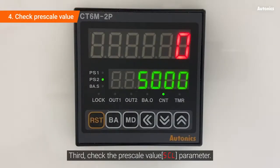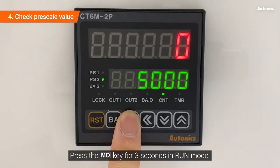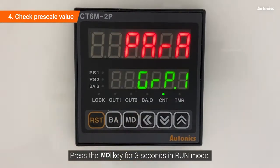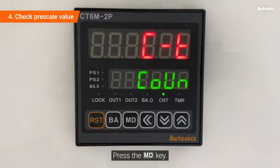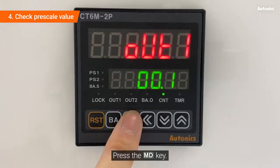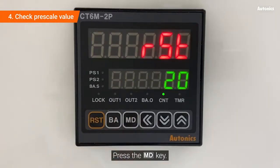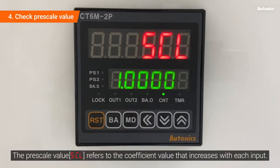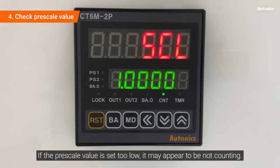Third, check the pre-scale value SCL parameter. Press the MD key for 3 seconds in run mode. Press the MD key. The pre-scale value SCL refers to the coefficient value that increases with each input. If the pre-scale value is set too low, it may appear to be not counting.